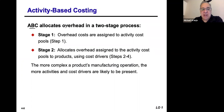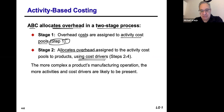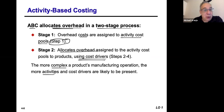Activity-based costing allocates overhead in a two-stage process. Step one looks at costs based on these activity cost pools. Step two allocates the overhead to those costs using the cost drivers. The more complex it is for a manufacturer to put together products or services, the more activities there will be in producing them, and that means we have to identify the cost drivers in each of those activities.